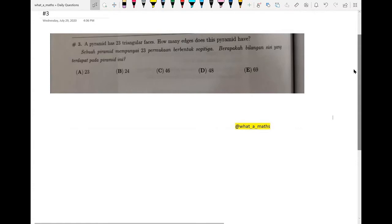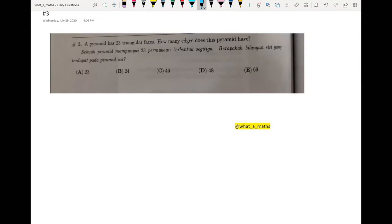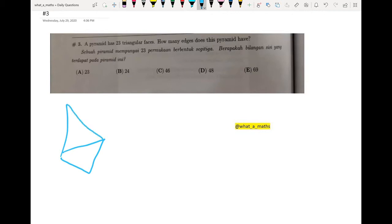Okay, so for this question number 3: a pyramid has 23 triangular faces, how many edges does this pyramid have? First of all, to make things easier, I will consider a pyramid with the least triangular faces first, that is 3. So if I have a pyramid with 3 triangular faces...